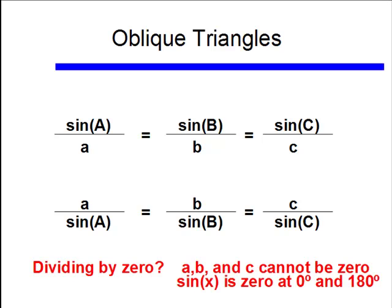What about sine A, sine B, and sine C? Well I know that sine of zero is zero, and the next time that sine is zero is 180 degrees. Well we're not going to have an angle of zero, and we're not going to have an angle of 180 degrees in our triangle, so I don't have to worry about this. There are no cases for an oblique triangle that would cause me to divide by zero.